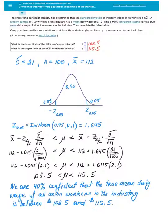Now it's time to recall how we construct the interval. Our true mean will be estimated by taking the sample mean, which we call the point estimate, and subtracting on the left and adding on the right a quantity called the margin of error. The margin of error is found by multiplying the critical value Z sub alpha over 2 times the standard error, which is sigma divided by the square root of the sample size n.